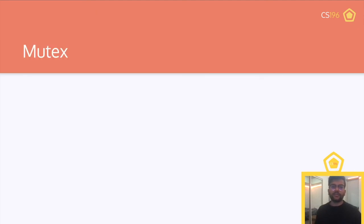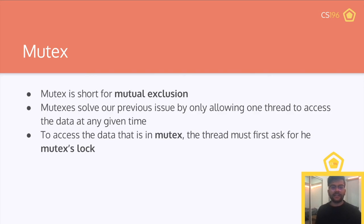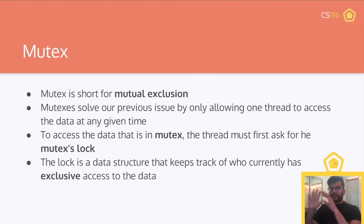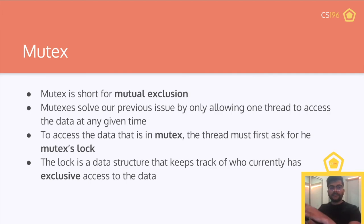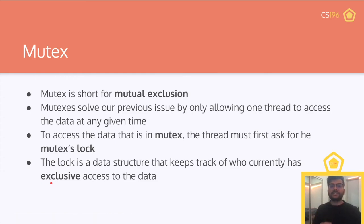How do we get around this? We're going to introduce the idea of mutual exclusion, or mutex. Mutex is short for mutual exclusion. Mutex solves our previous issue by only allowing one thread to access data at any given time. To access data that is in a mutex, the thread must first ask for the mutex's lock. Once we lock the data, we can access and interact with it, but nobody else can interact with it because it's locked. Once we are done, we unlock the mutex and somebody else can grab it. The lock is a data structure that keeps track of who currently has exclusive access to the data — only one thread can access the mutex at a given time. The other threads have to block and wait until the mutex is unlocked.